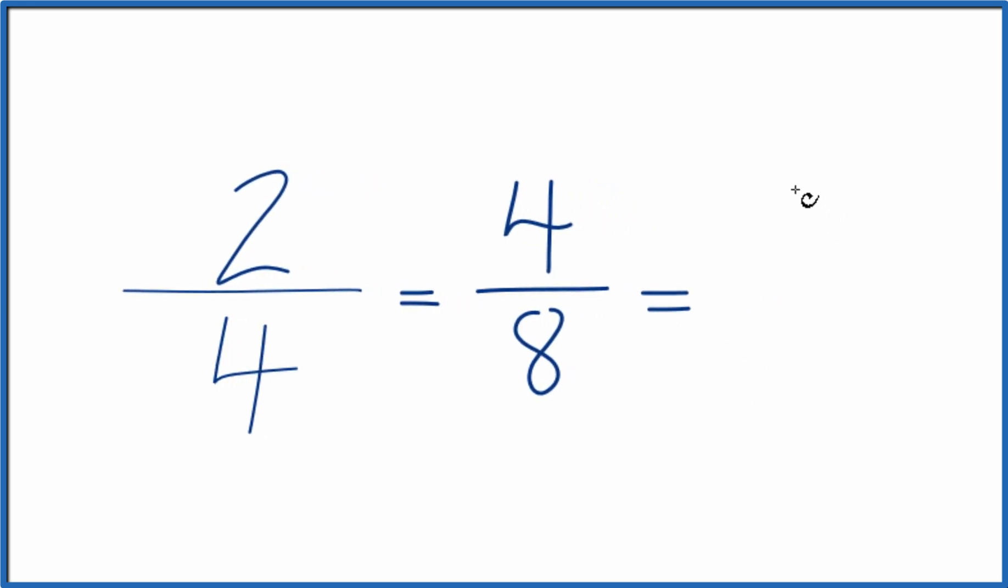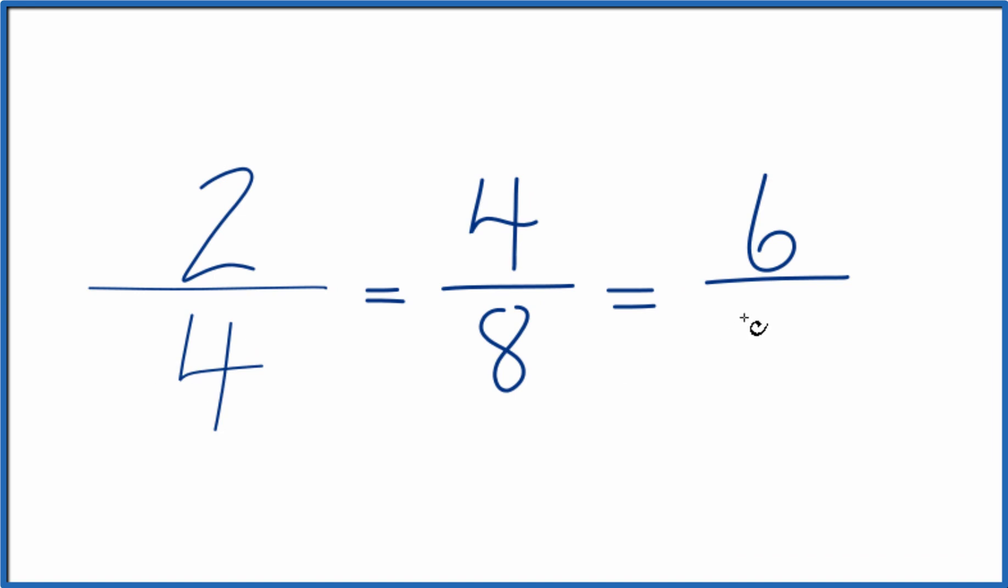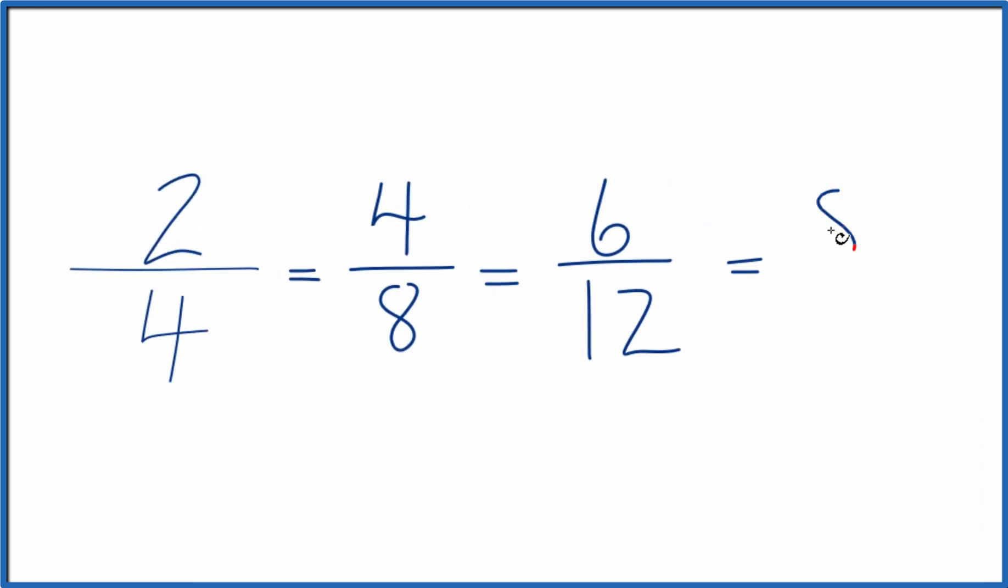Let's do 3 times 2, which is 6, and 3 times 4, that's 12. Another equivalent ratio. One more. 4 times 2, that's 8. 4 times 4 is 16, and these are all equivalent ratios.